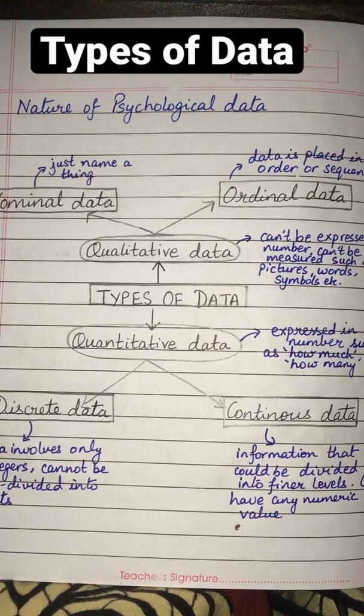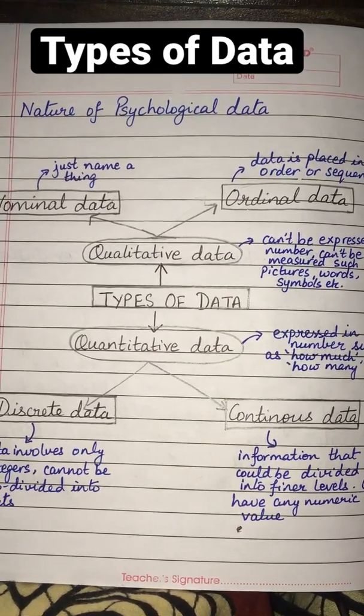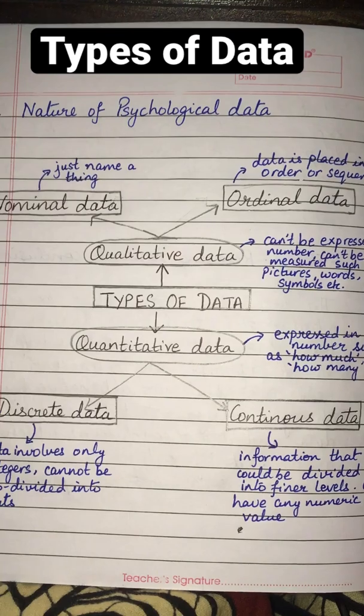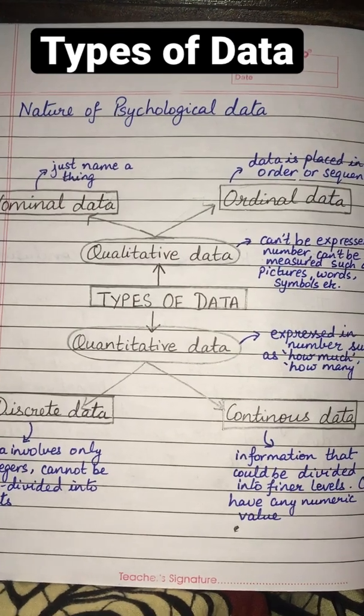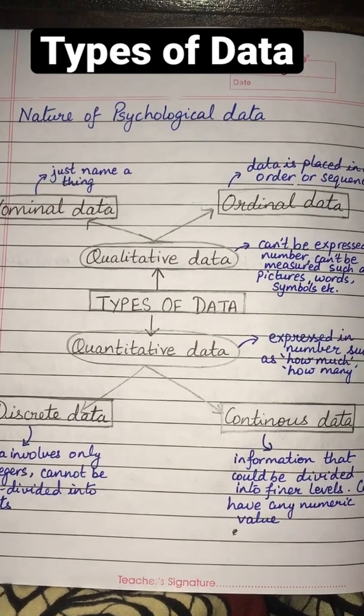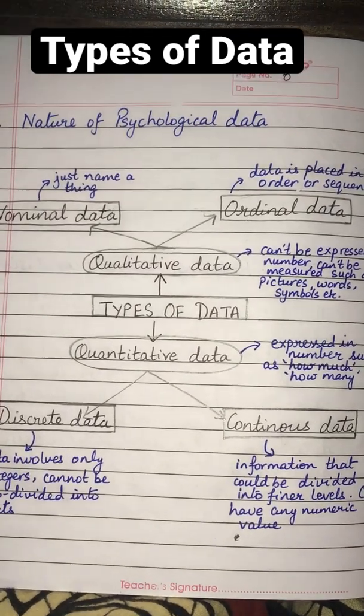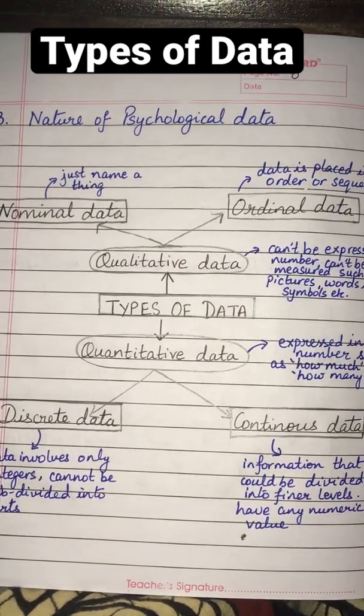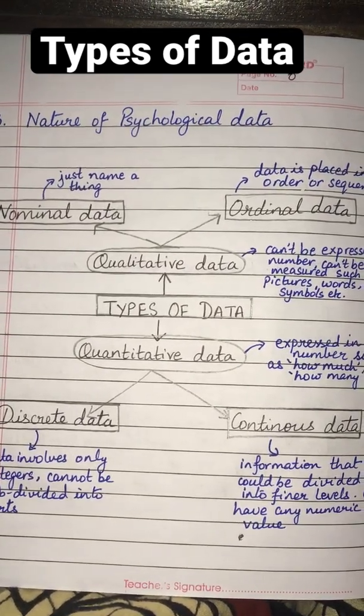Qualitative data is of two types: nominal data, which just names a thing, such as gender, which could be women or men; and ordinal data, which is data that is placed in order.